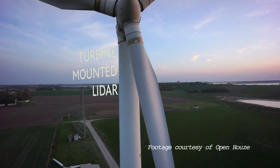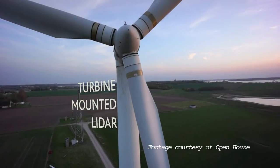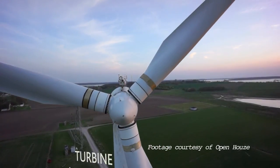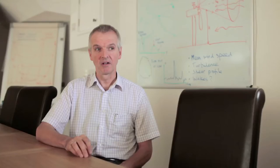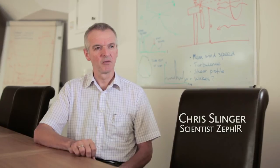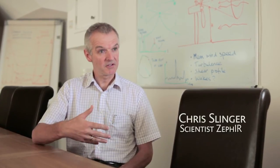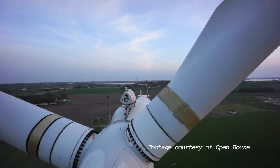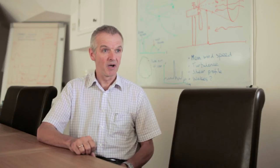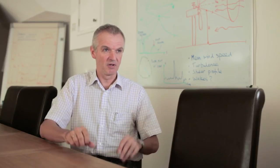One area of potential growth is the mounting of lidars on the wind turbines themselves. By mounting a lidar on a turbine, you can get prior information of the wind before it strikes the turbine. For example, if there's a large gust that could potentially damage the turbine, then you could warn the turbine and it could feather its blades or pitch its blades.